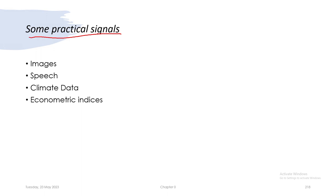Practically, when we communicate over electrical communication systems — that can be telephone, television, your laptop, cell phones, anything — we practically deal with these forms of signals: images, speech, econometric indices. And mainly, when we communicate in a layman's perspective, there are video calls and videos.